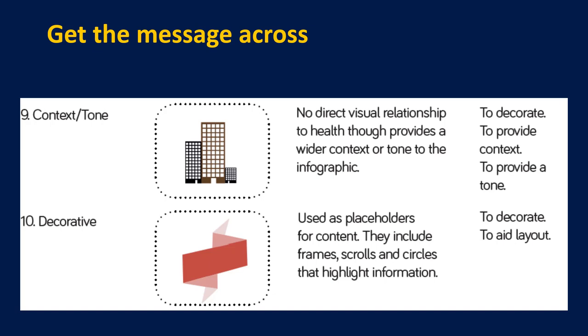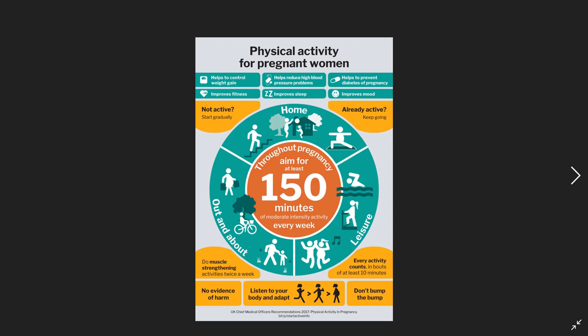The general public do not conceptualise graphs. Remember that you're not generally communicating with a science audience, so there are limited ways in which you can use graphs. The obvious ways that work are things like pie charts, but not overly complicated, and also donut-based shapes. In this example, we can see icons being used to display activity — this is about physical activity of pregnant women — and notice that all of the icons are moving-based icons, designed to reinforce the message.